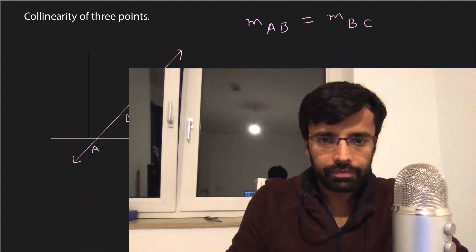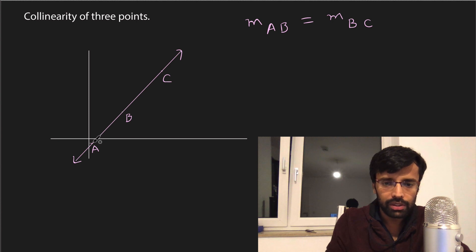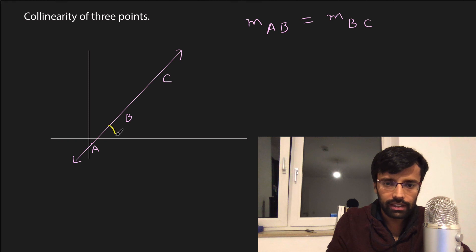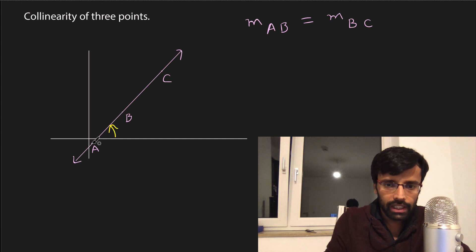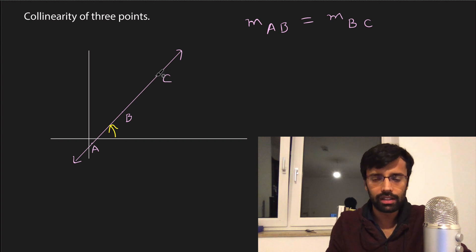Let's see the first method: collinearity of three points using slope. Take three points A, B, C on a straight line. If we compute the slope of AB and the slope of BC, both slopes should be equal because it's the same straight line and the angle is the same. So if slope of AB equals slope of BC, that means the three points are collinear. It's a very simple concept.